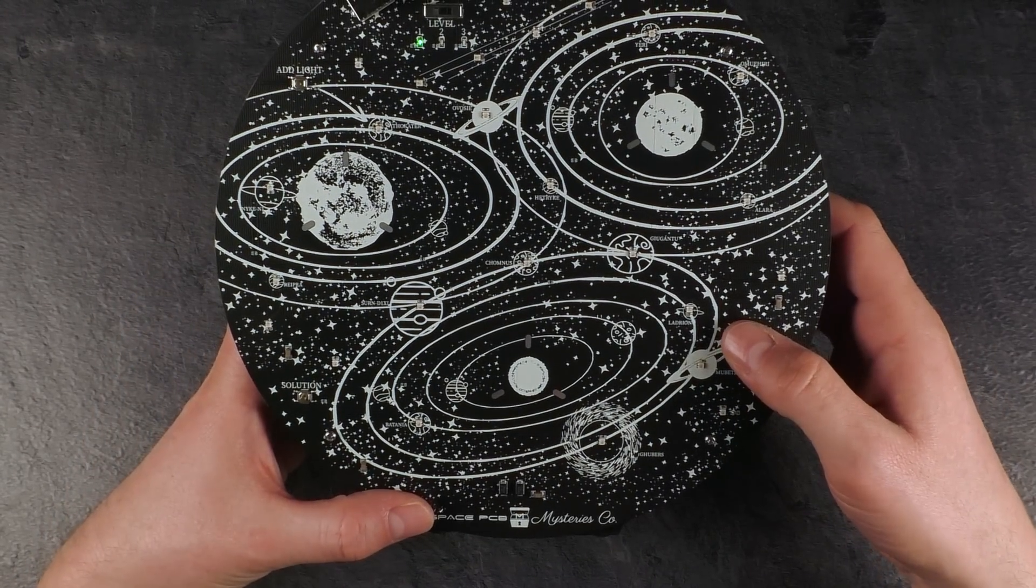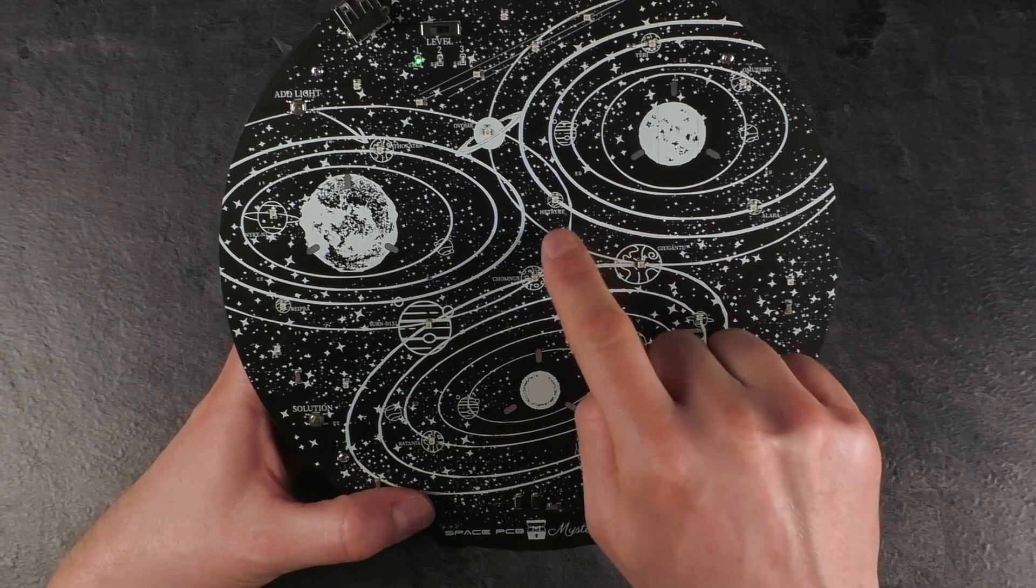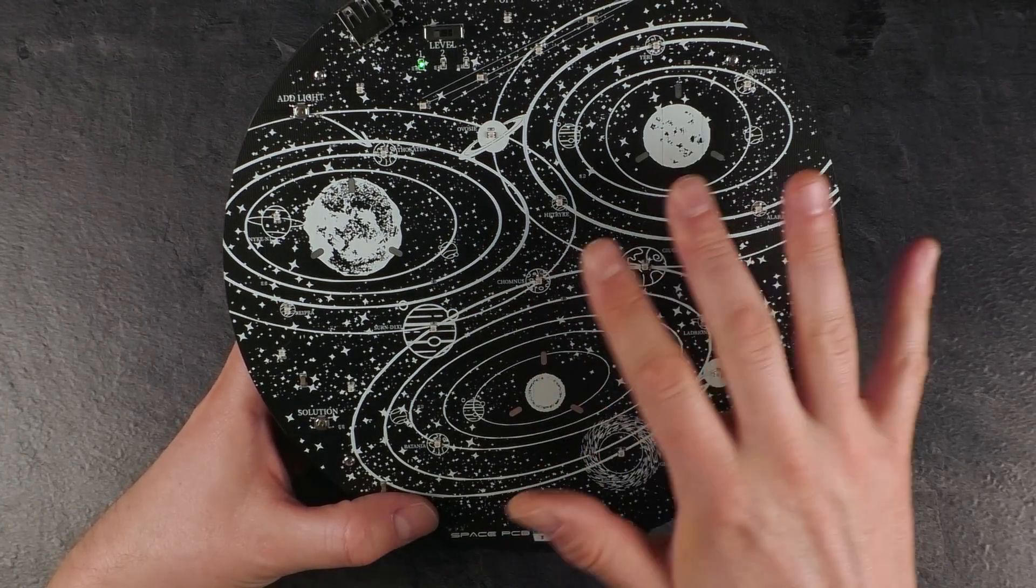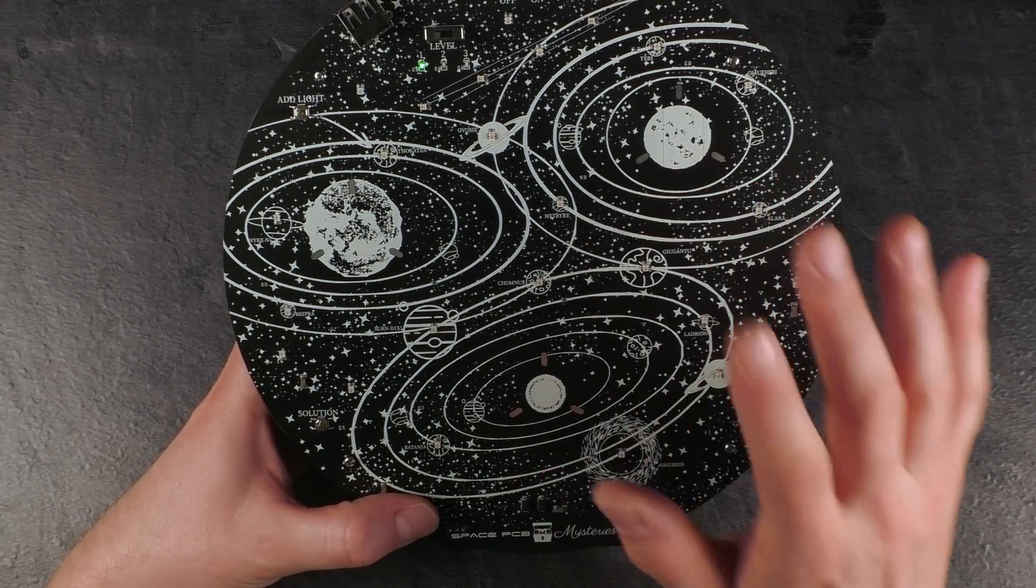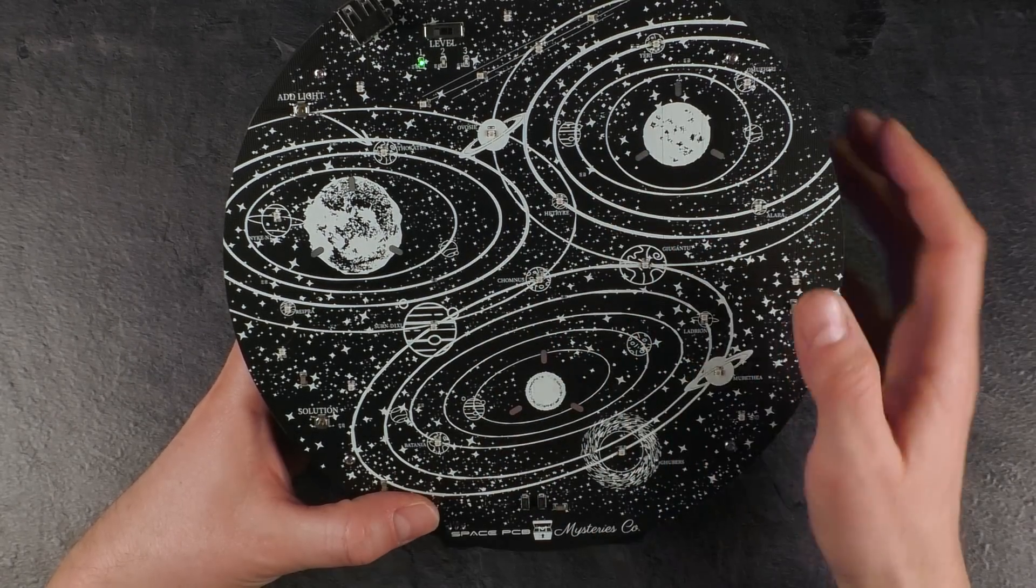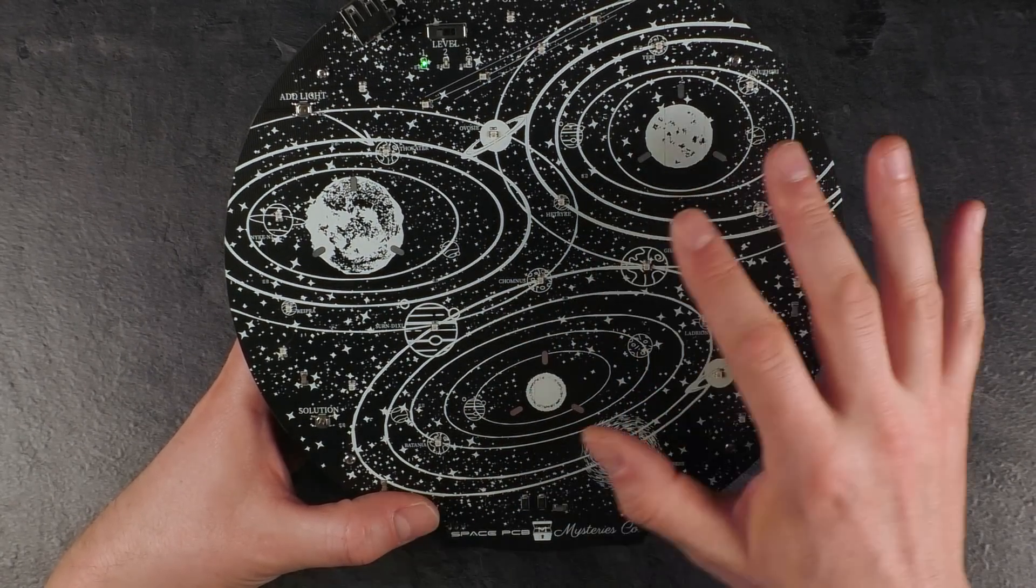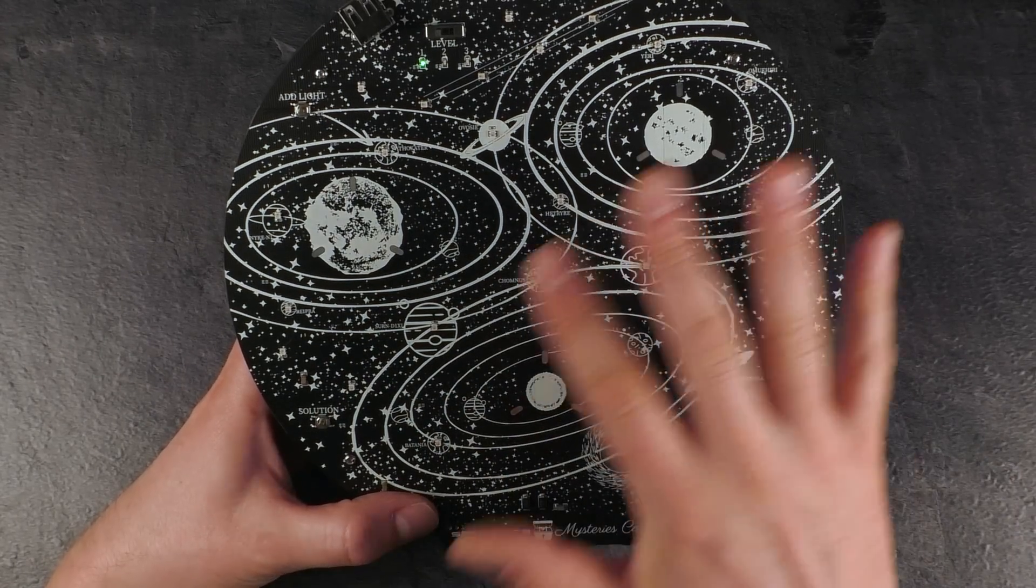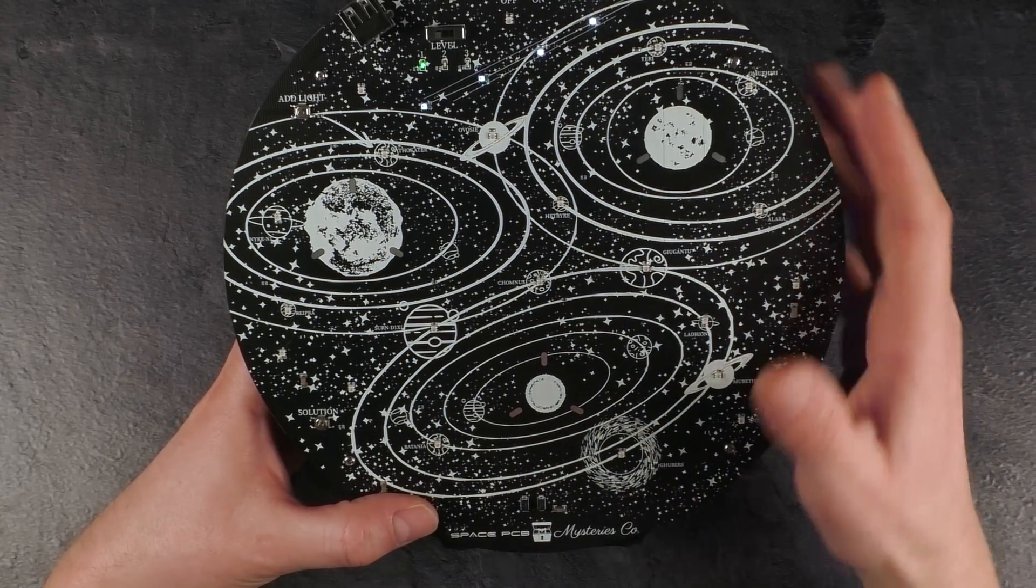When I tilt the puzzle like so you can see all the LEDs. They are not shining right now but you can see how many LEDs are there. Each LED that is important represents a planet. We got three planetary systems over here and they are partially interfering. Some of the planets belong to multiple planetary systems and can switch between each other.